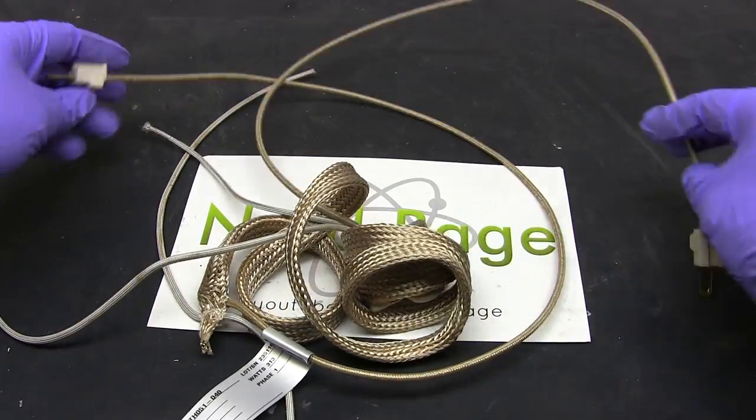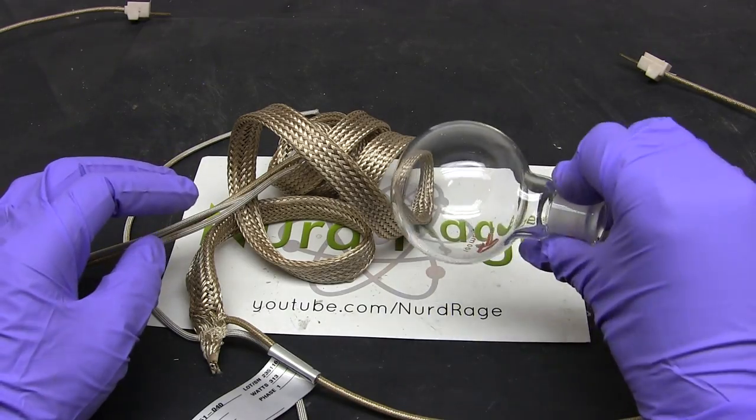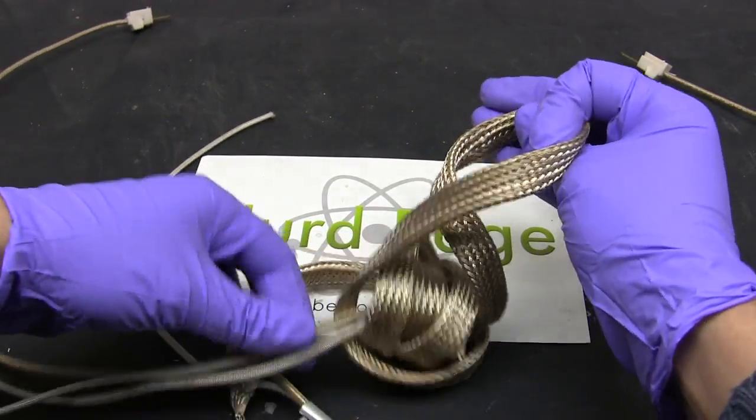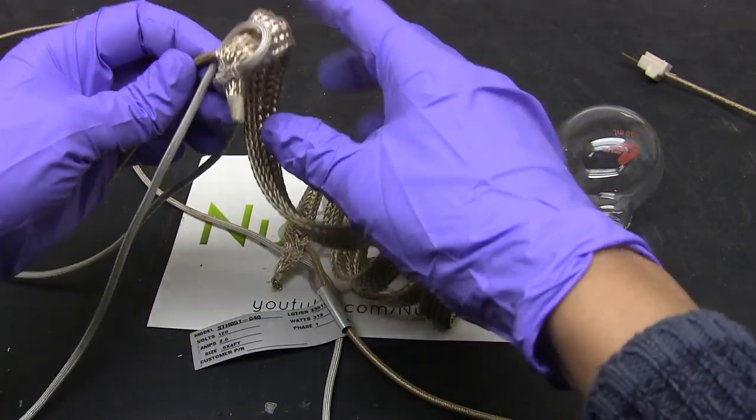Anyway, let's get started making the mantle. We're going to shape this to fit a 100 milliliter round bottom flask. You can use larger sizes if you like, the procedure is the same.